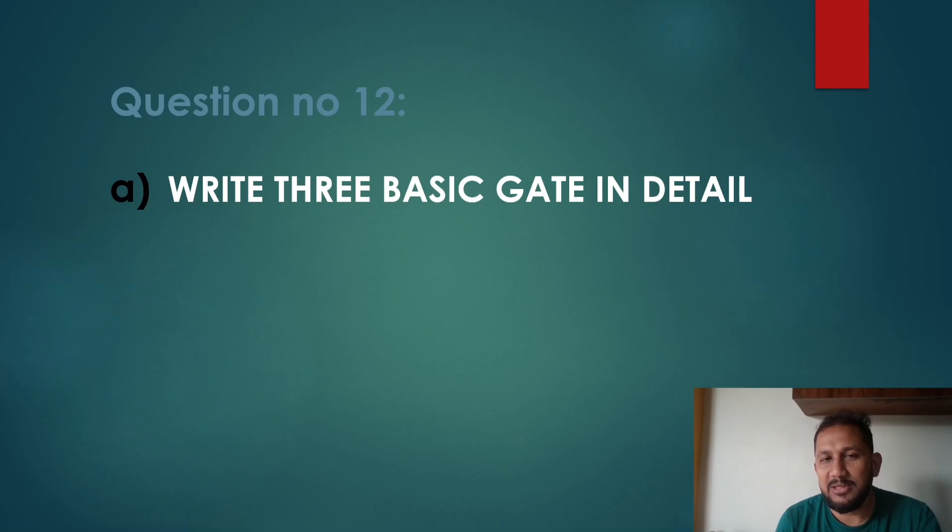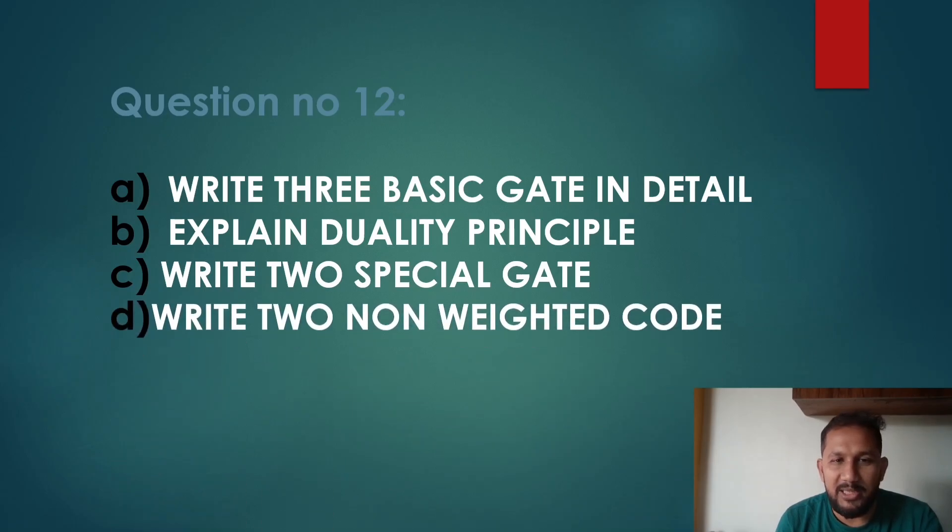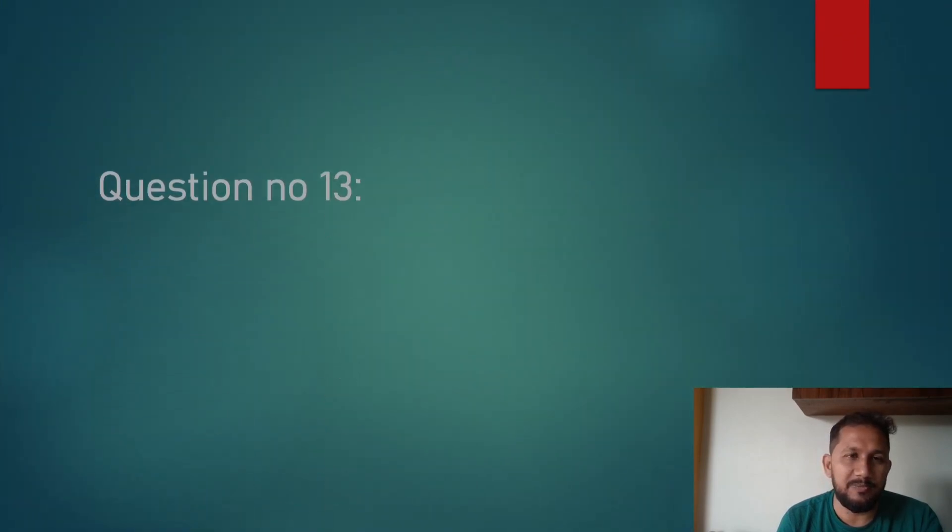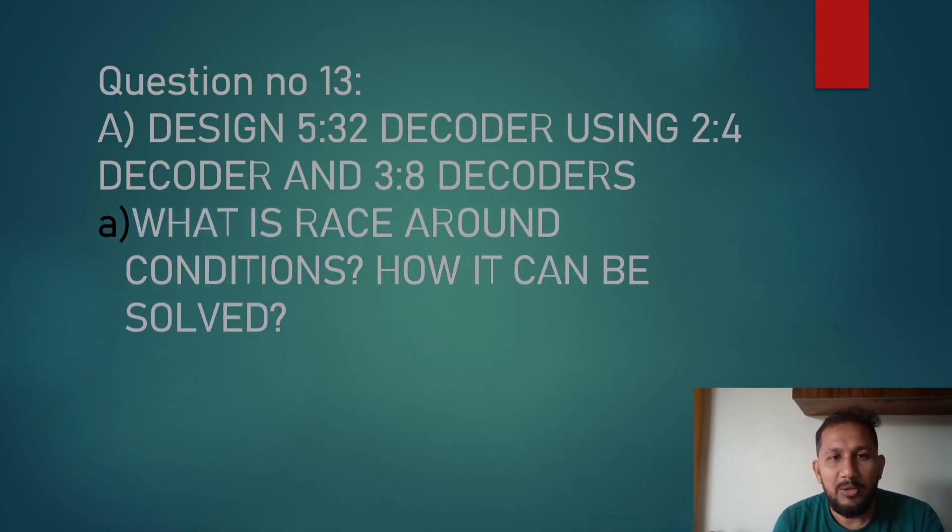Question number 12. Write 3 basic gates in detail. Explain duality principle. Two special gates, two non-weighted code, BCD and two alphanumeric codes. Question number 13. Design 5-32 decoder using 2-4 decoder and 3-8 decoder. What is race around conditions and how it can be solved?